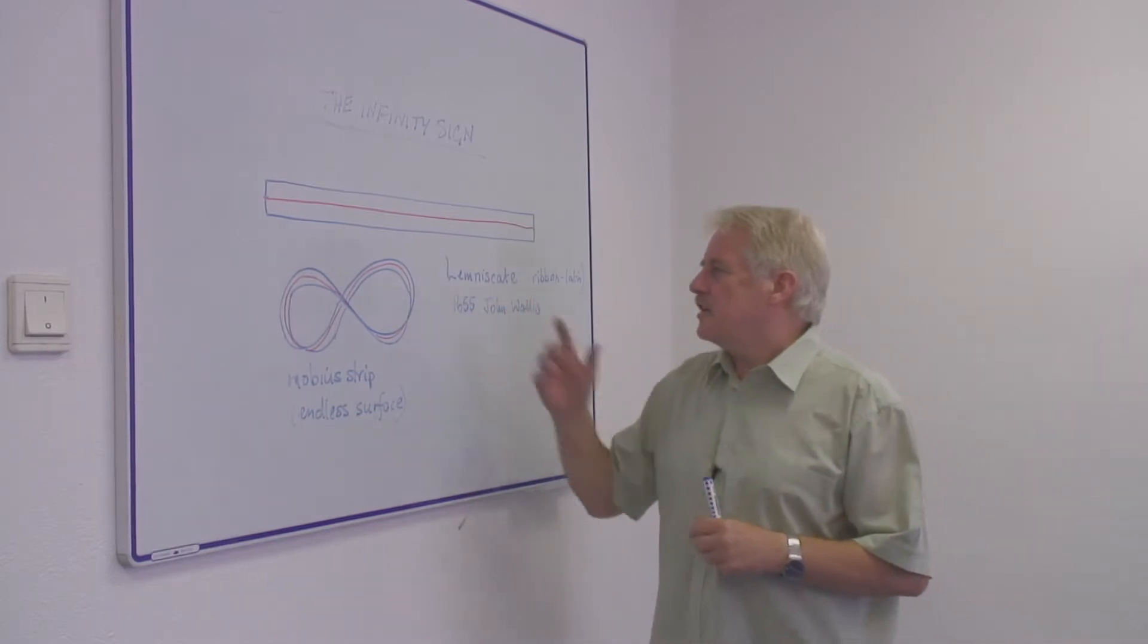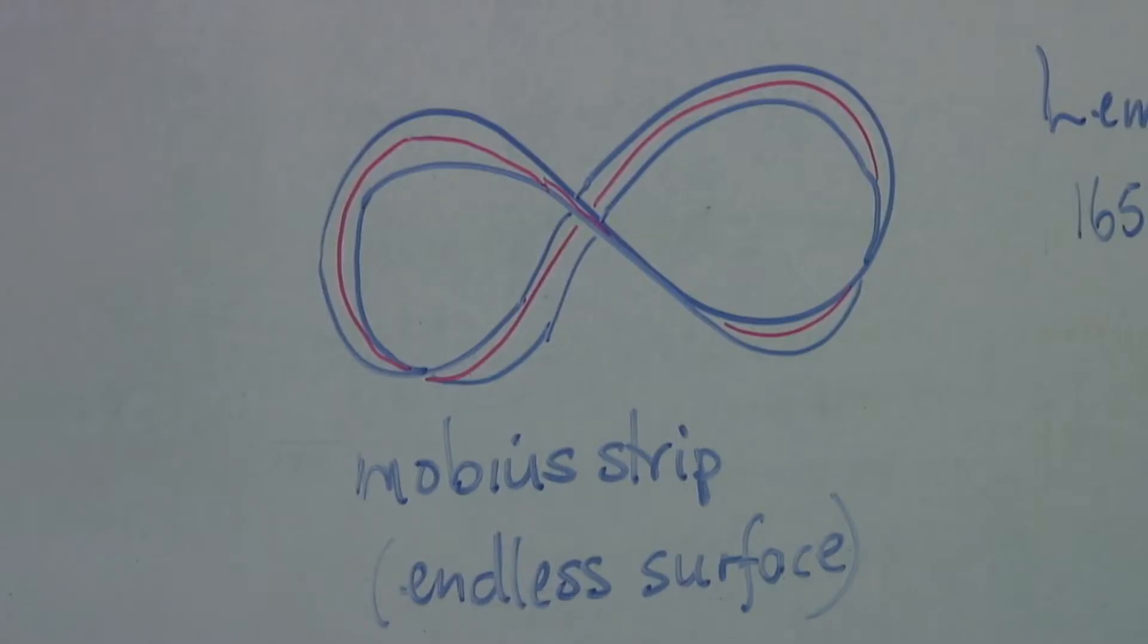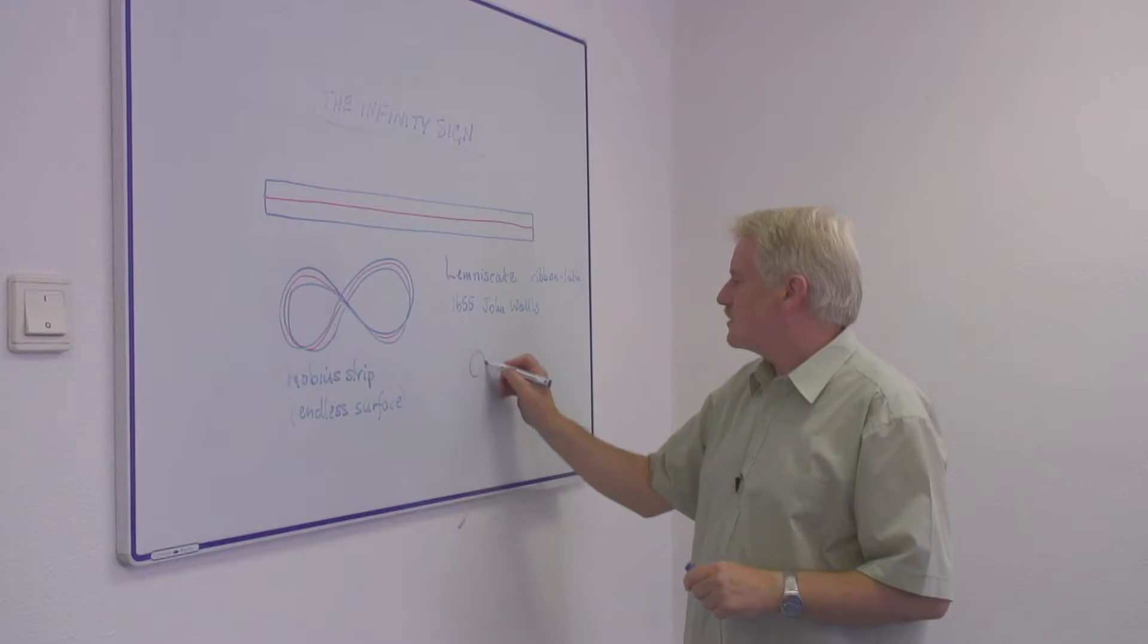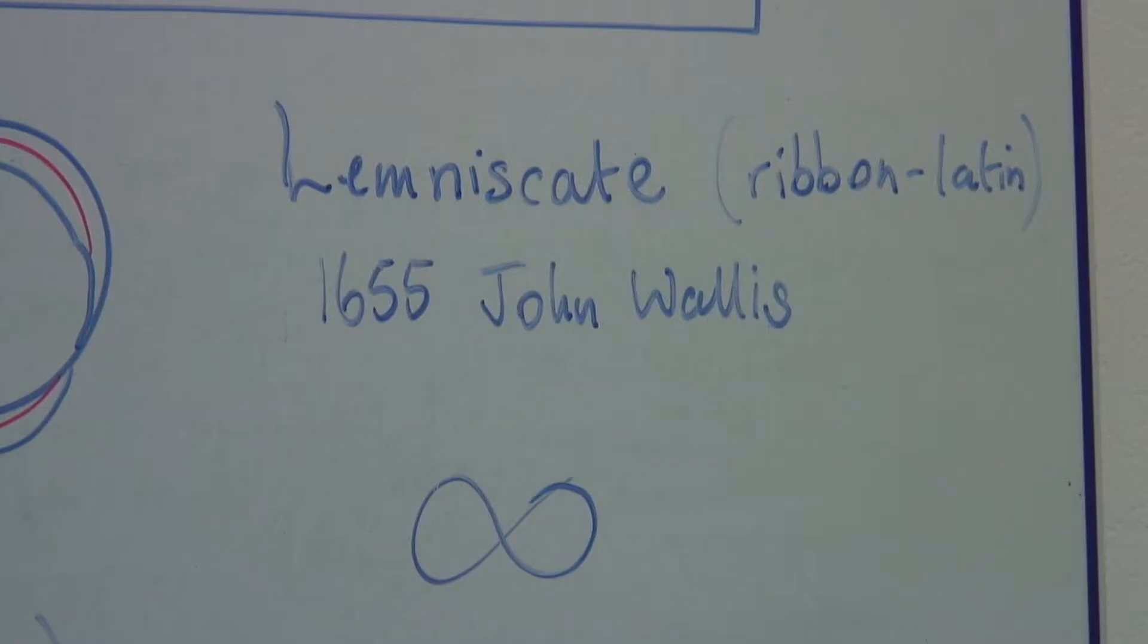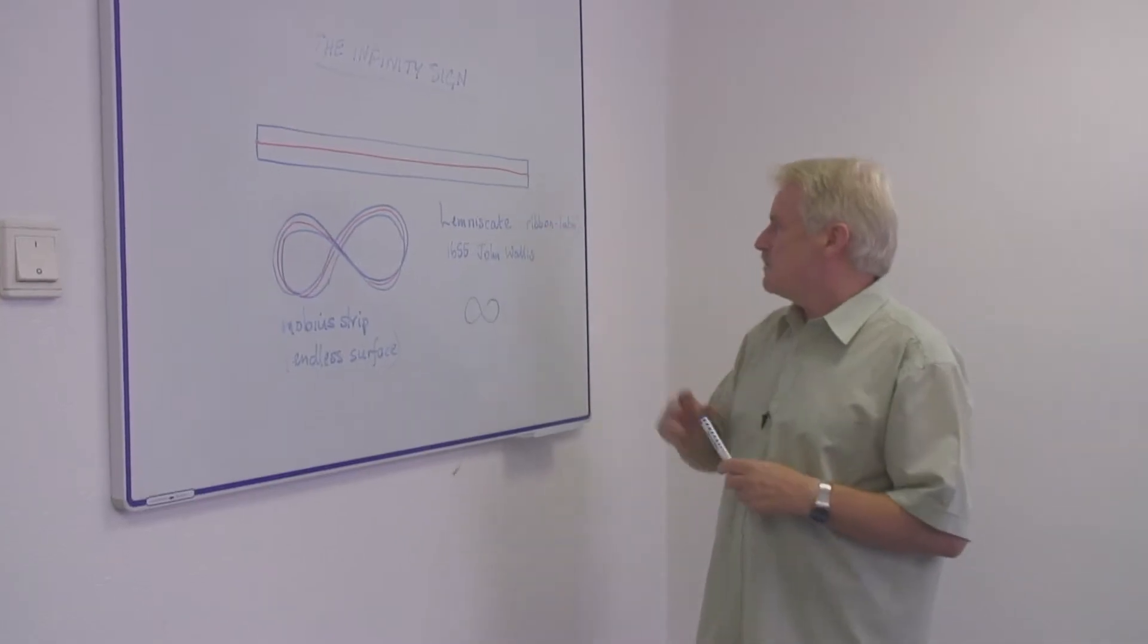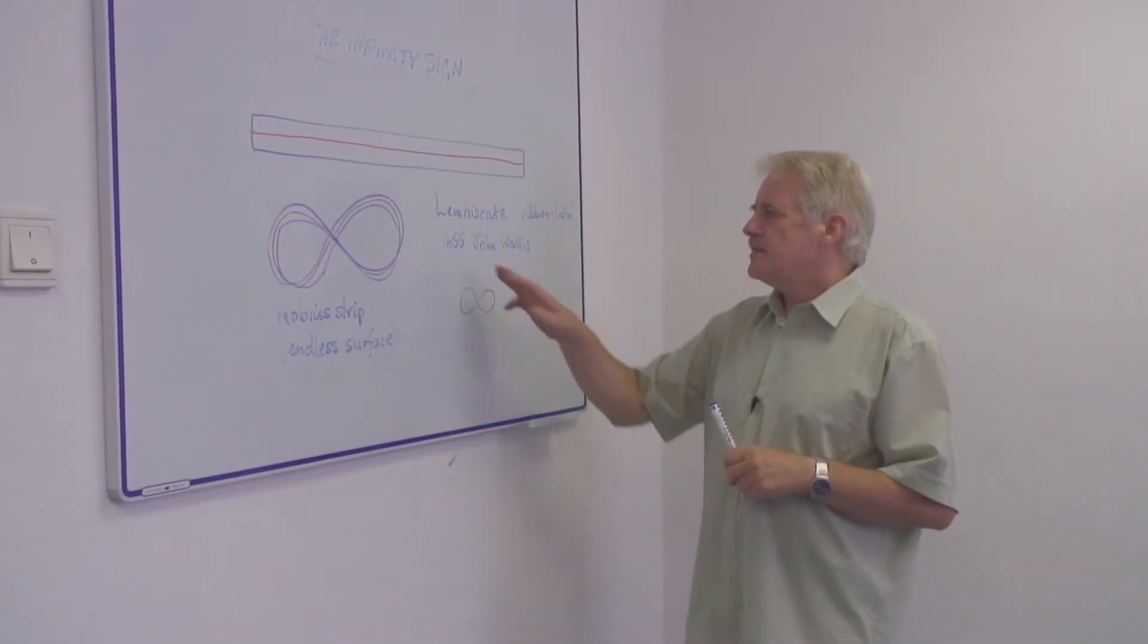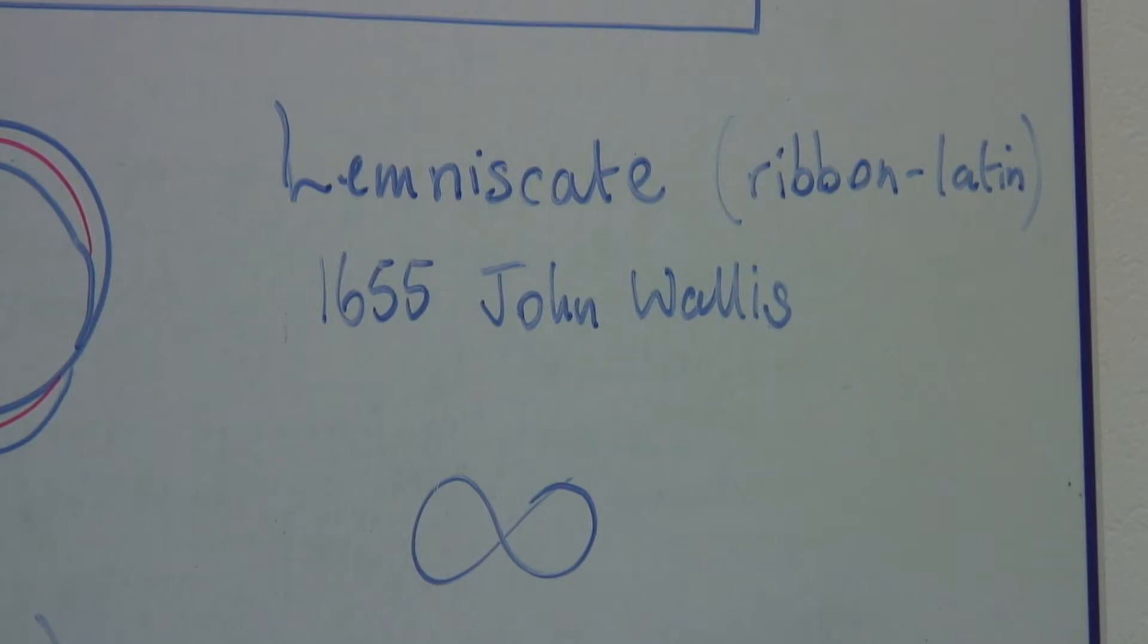This symbol, which we call the infinity sign, is usually written in this way. It's called a lemniscate, and in Latin it means ribbon. And it was invented in 1665 by John Wallace.